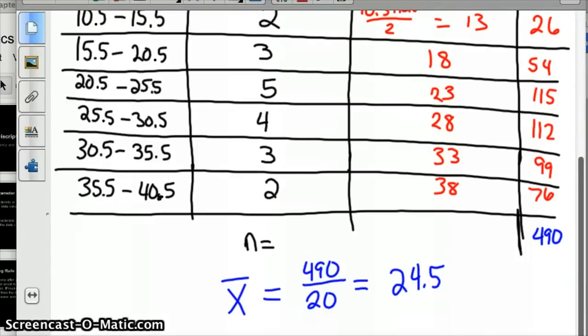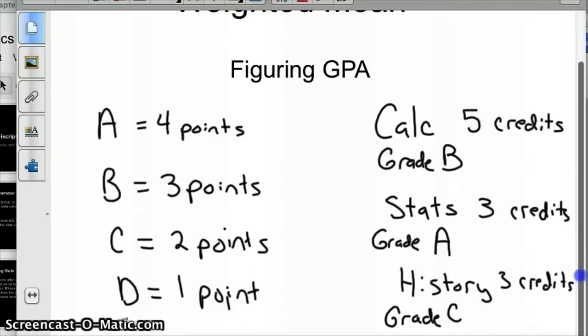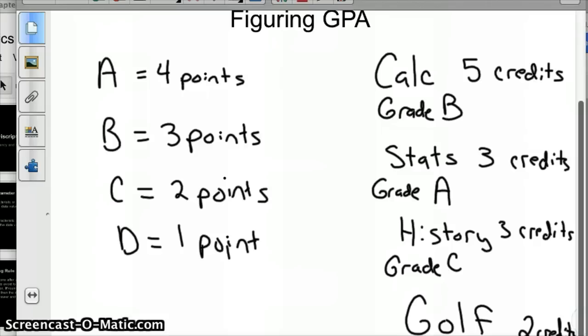The last type of mean I'm going to show you is weighted mean. A good example is figuring GPAs. Let's say A is worth 4 points, B is worth 3 points, C is worth 2 points, and D is worth 1 point. Let's say you took some courses: calculus, which is a 5 credit class at most colleges, and you got a B.